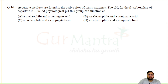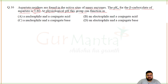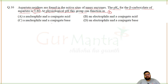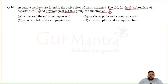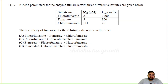Aspartate residues are found in the active sites of many enzymes. The pKa of the beta-carboxylate of aspartate is 3.86. At physiological pH (7), this group will be negatively charged. It can function as a nucleophile (a positive charge lover) and as a conjugate base.